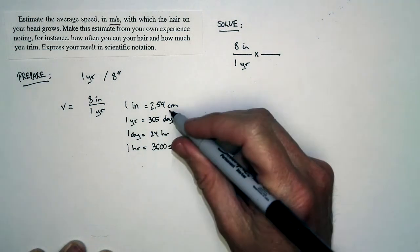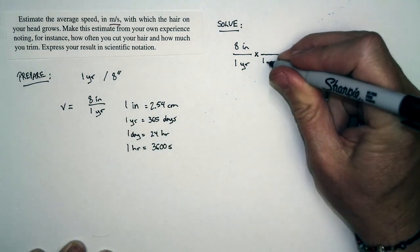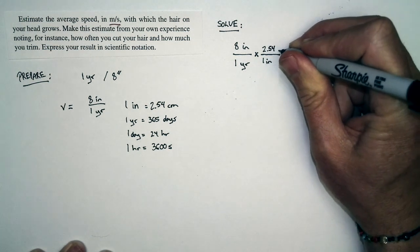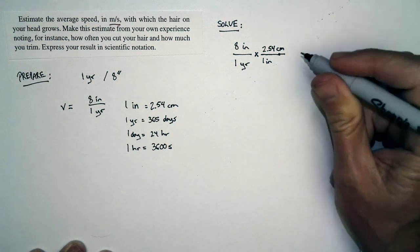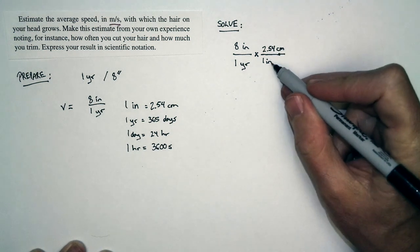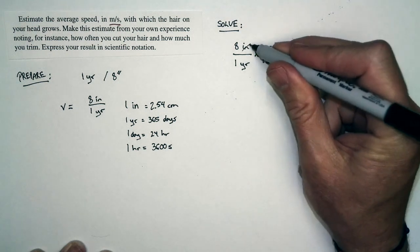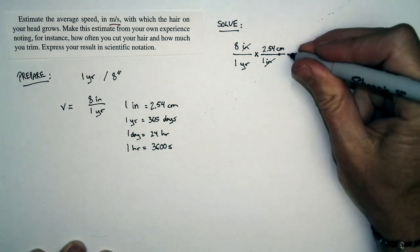One inch is 2.54 centimeters. I want to cancel inches and end up with centimeters, so I'll multiply by 2.54 centimeters divided by one inch. Well, these are equal to each other, and so this expression is just equal to one, but I cancel inches, and I'm left with centimeters.